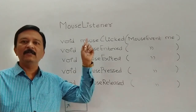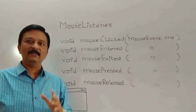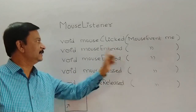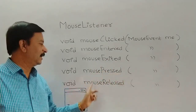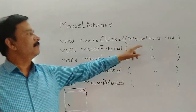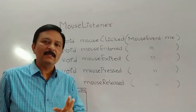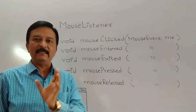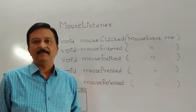In a graphical user application, the mouse is heavily used along with the keyboard. All mouse-related methods are available in the MouseListener interface. This interface contains five special methods: mouseClicked, mouseEntered, mouseExited, mousePressed, and mouseReleased. All these methods have a common argument which is a MouseEvent class object. Every event class has a matching listener interface — for MouseEvent, the interface is MouseListener.